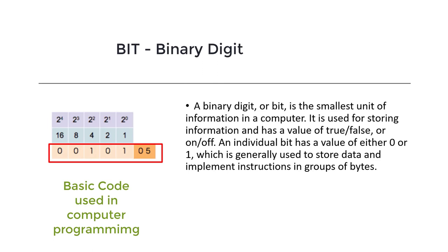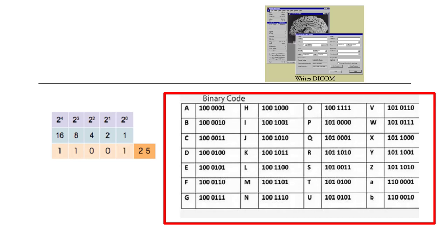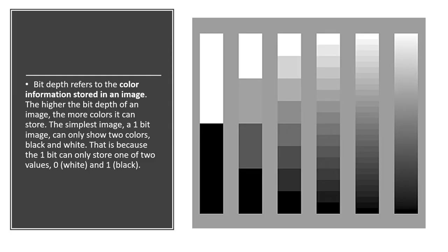The term bit is a contraction for binary digit. A binary digit or bit is the smallest unit of information in a computer. It is used for storing information and has a value of true or false or on and off. Using binary code, we can demonstrate anything in the universe, including letters.